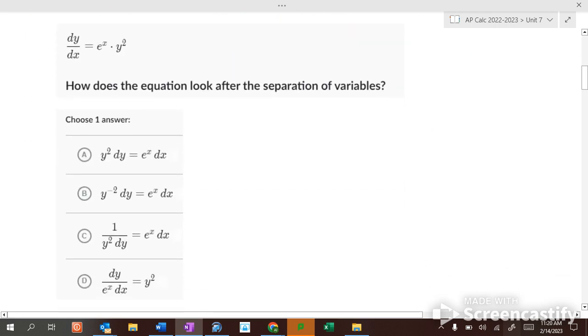So, how would this look like if you do the separation of variables? How would we get the y's together? Divide by y squared, and I multiply by dx. So it would be 1 over y squared dy equals e to the x dx.